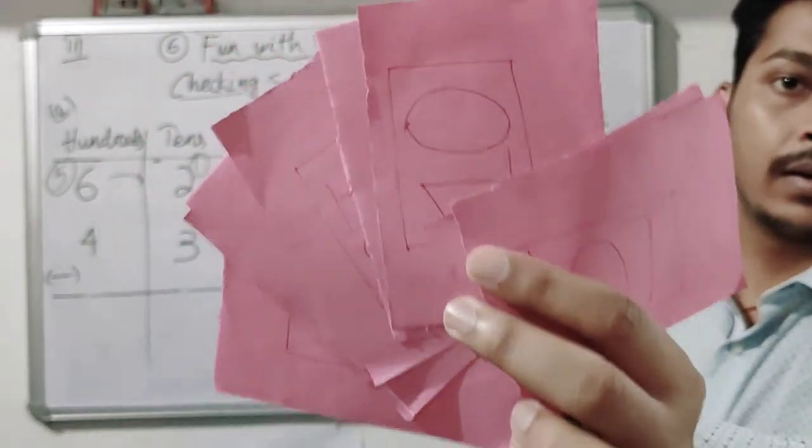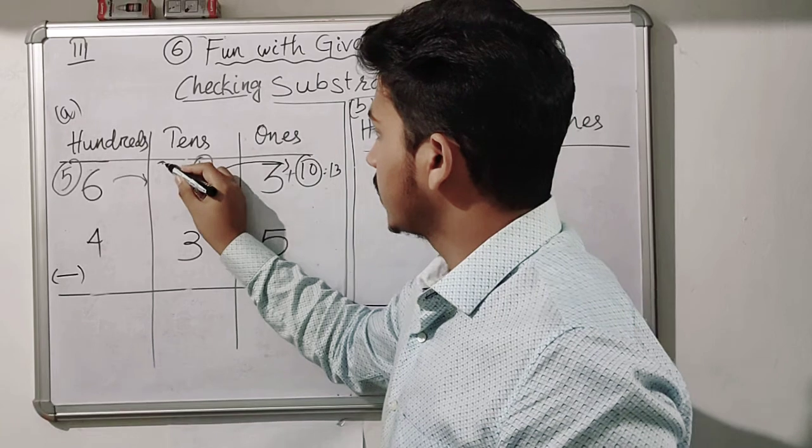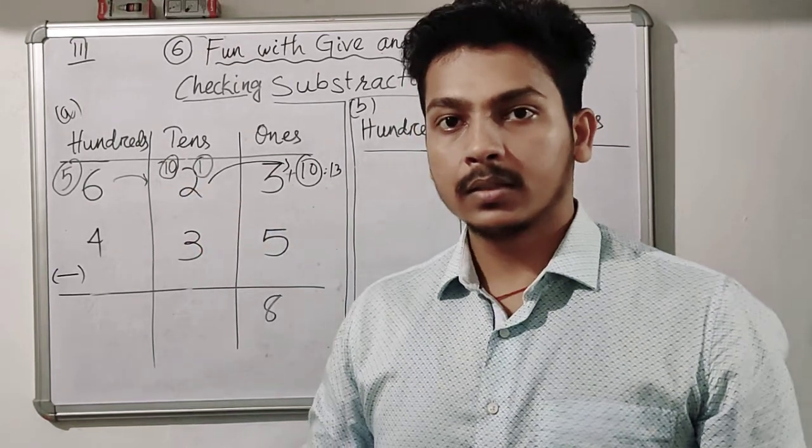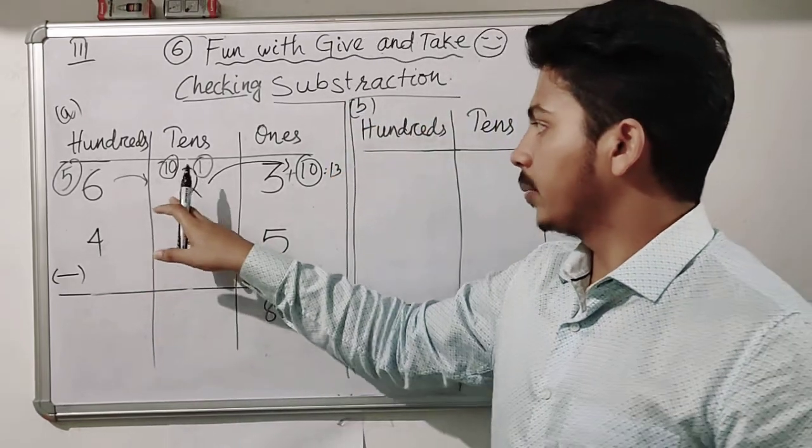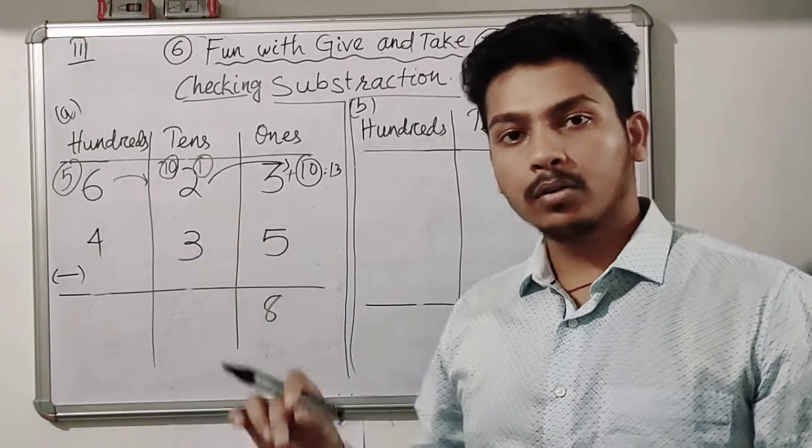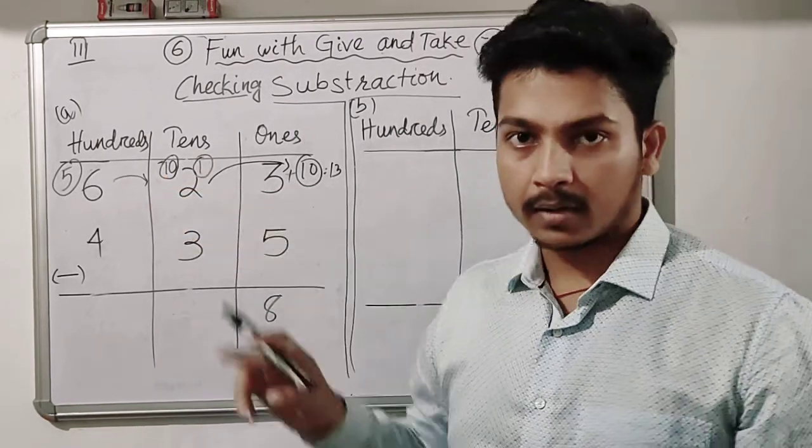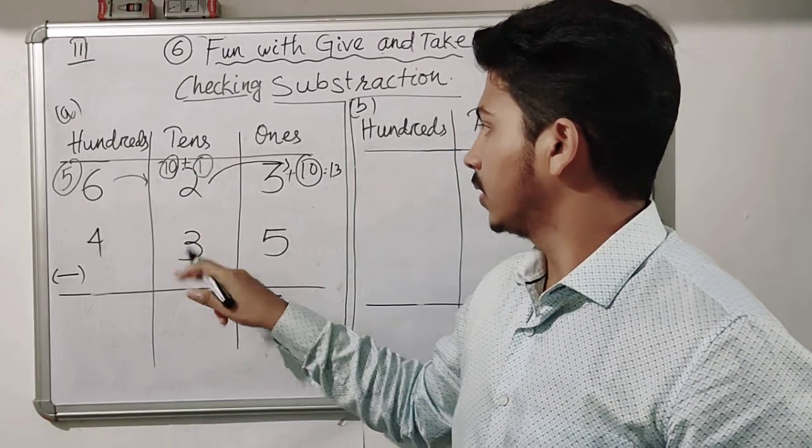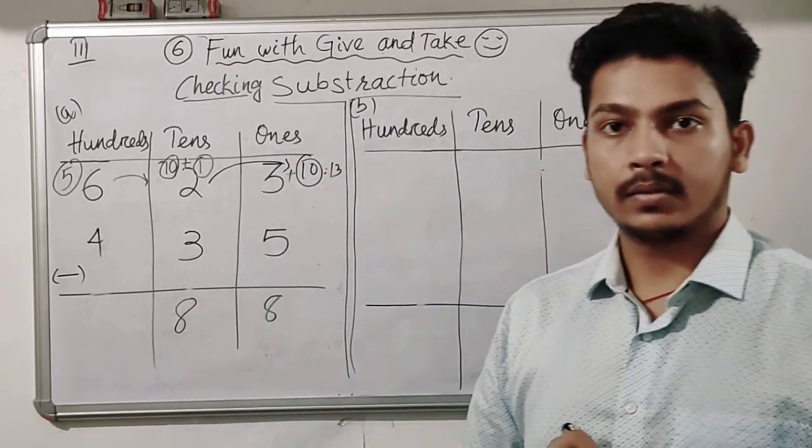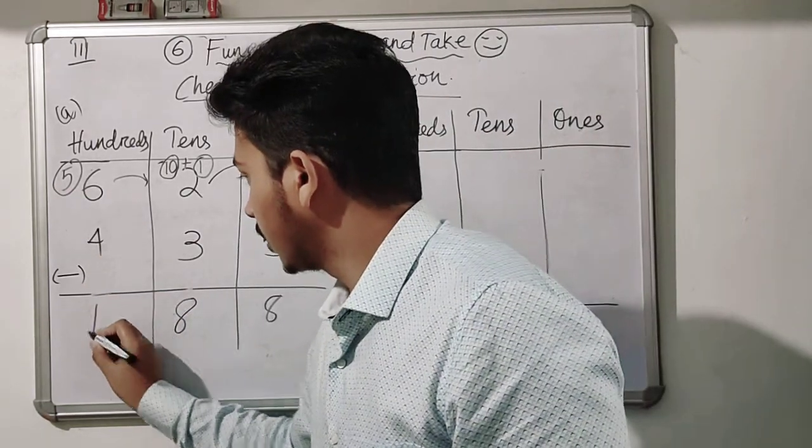It will receive ten tens, so ten tens plus one ten equals eleven. Now eleven minus three equals eight. Here five is remaining, so five minus four equals one. The answer will be 188.